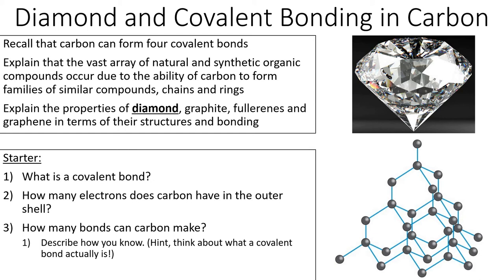Hi guys, today we're going to be looking at diamond and the covalent bonding that happens in carbon. By the end of this lesson, we should be able to recall that carbon can form four covalent bonds, explain that the vast array of natural and synthetic organic compounds occur due to the ability of carbon to form families of similar compounds, chains and rings, and explain the properties of diamond. We'll look at graphite, fullerenes and graphene in later lessons.